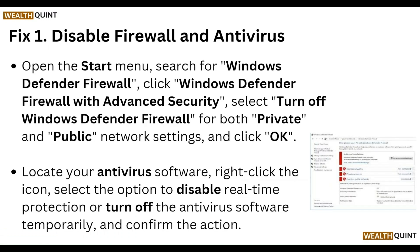First, disable the firewall and antivirus. Open the Start menu and search for Windows Defender Firewall, then click on Windows Defender Firewall with Advanced Security and select Turn Off Windows Defender Firewall.